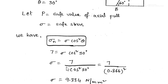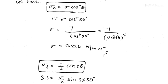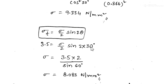Now considering shear stress on the oblique plane: the formula is σt = (σ/2)·sin2θ. The shear stress on the oblique plane is given as σt = 3.5 N/mm² and θ = 30°. Note: do not substitute the previously found sigma value here — find sigma independently from this equation. Substituting and simplifying, we get σ = 8.083 N/mm².